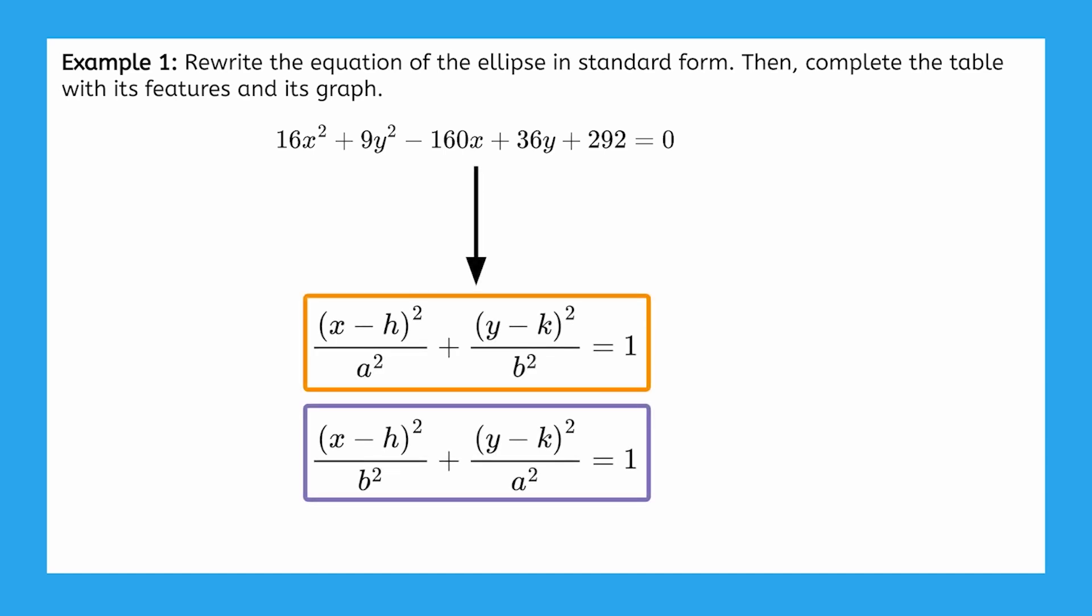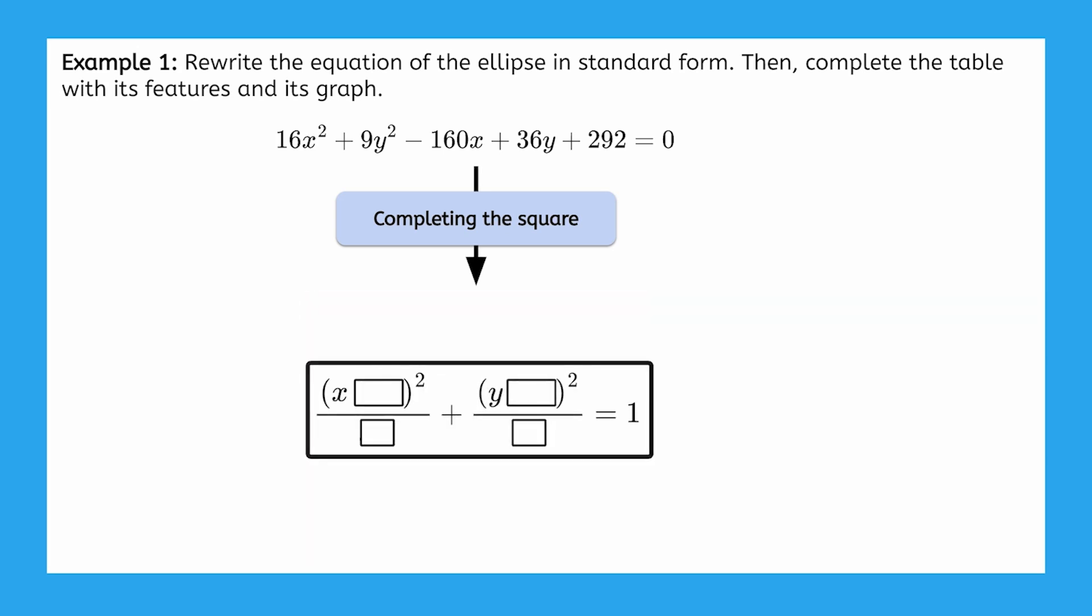Notice how the standard forms have the x and the y contained in perfect squares. Therefore, we can convert this equation into standard form by completing the square. In essence, we'll work toward writing this equation into a sum of two perfect square terms equal to 1, which is the format of the standard forms. Even though we've done this process before with circles and parabolas,